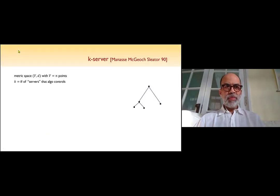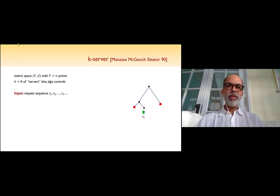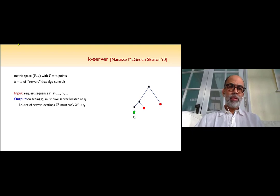So the problem is the K-Server problem. Just in case you haven't seen the problem before, let me quickly remind you what it is. You're given a metric space on n points and you control K servers. These red blobs here are K servers the algorithm controls. At every point in time, there's a request and the request comes at one of the nodes, one of the points in this metric space. What you have to do is move one of the servers to that location. If there isn't a server already at that location, then there's a new request. These requests are coming online, so you don't know the future.